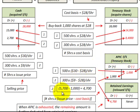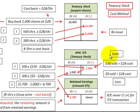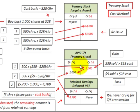The additional paid-in capital balance equals the number of shares issued times the difference between the issue price and the cost basis. A gain occurs when the selling price is greater than the cost basis — we credit additional paid-in capital. A loss occurs when the selling price is less than the cost basis — we debit additional paid-in capital. You cannot debit additional paid-in capital for more than the existing credit balance; once it is exhausted, the remaining balance goes to debit retained earnings. Remember, you can never credit or increase retained earnings for any Treasury stock transaction.